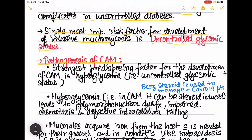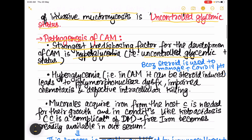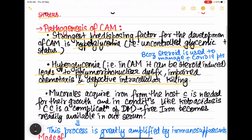The strongest predisposing factor in CAM pathogenesis is hyperglycemia, that is uncontrolled glycemic status. This hyperglycemia leads to polymorphonuclear dysfunction, impaired chemotaxis — that is impaired movement of white blood cells towards a chemical stimulus to the site of infection — and defective intracellular killing.